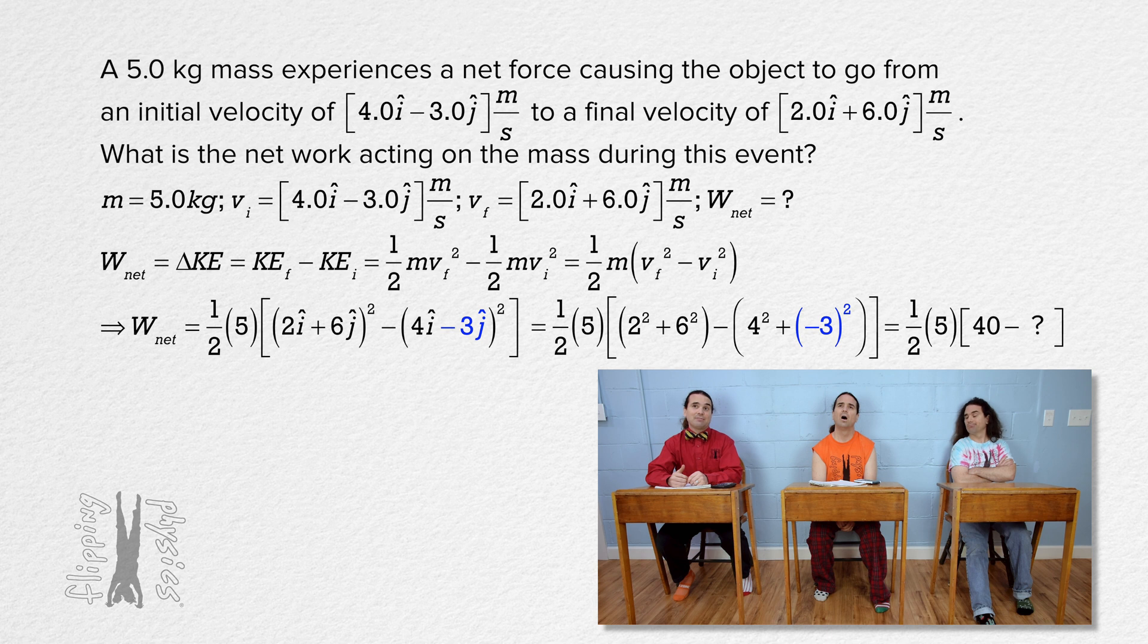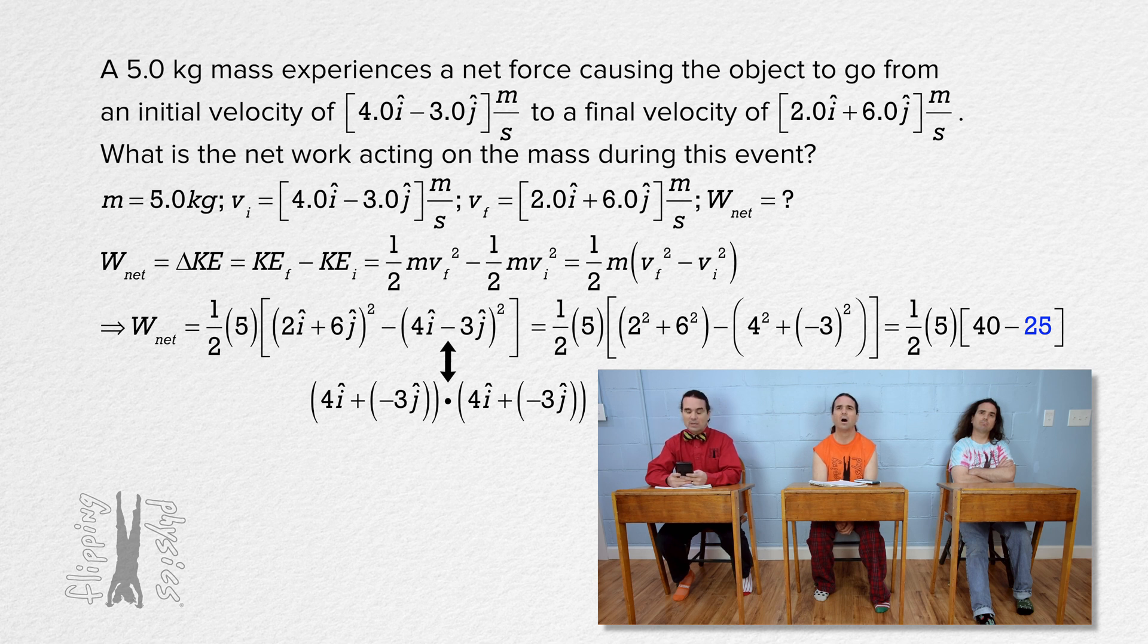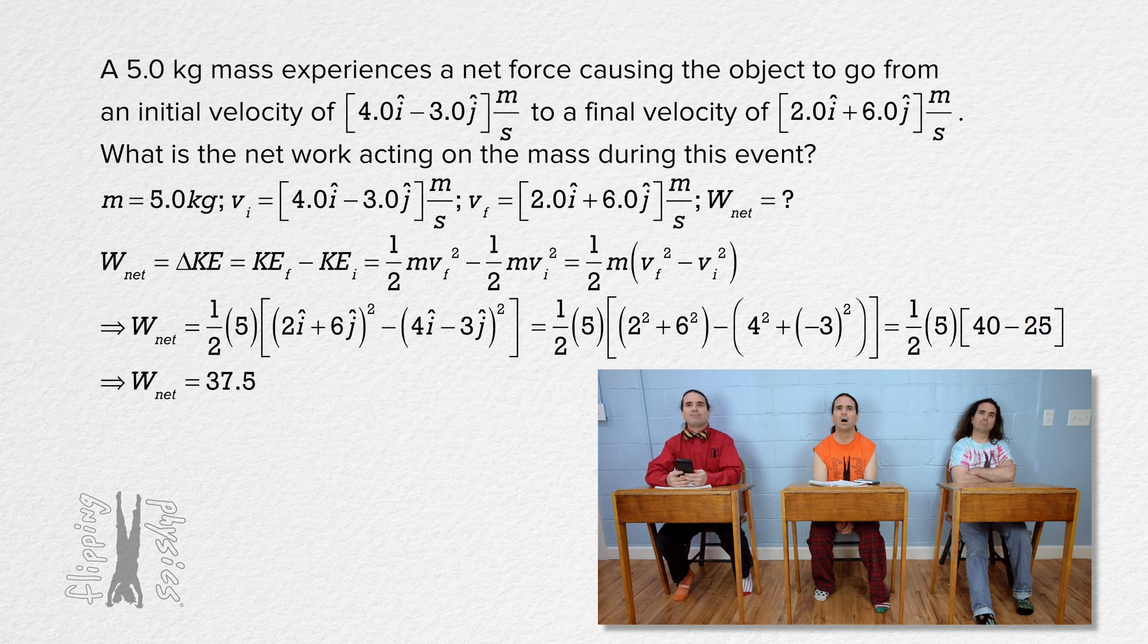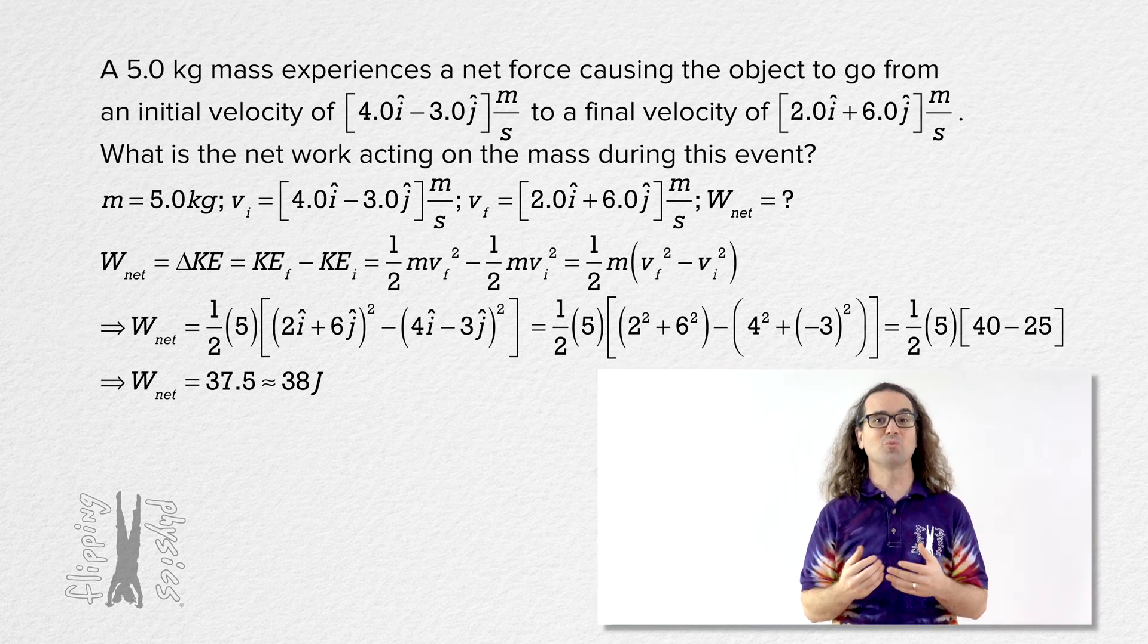Right. That needs to be negative 3 squared because it's the dot product of negative 3j and negative 3j. And squaring negative 3 gives us positive 9. So, it ends up being 40 minus 16 plus 9 or 25 instead of 40 minus 7. And we get 37.5 or 38 joules with two sig figs. There we go. We always have to be careful with negatives.